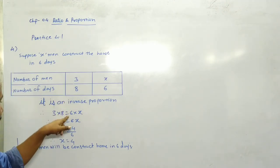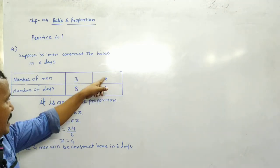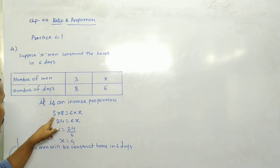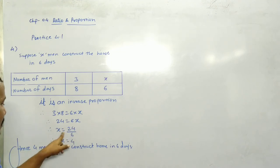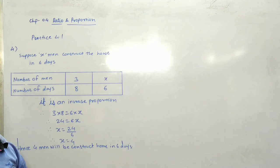Therefore, 3 into 8 is equal to 6 into x. 24 is equal to 6x. So x is equal to 24 divided by 6, x is equal to 4. I mean if you have to do this work in 6 days, 4 people will be able to do this work. Then this work will be completed in 6 days. Understand everyone? Okay, thank you, write down.